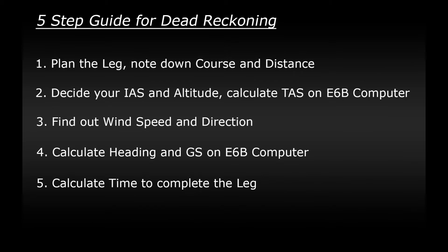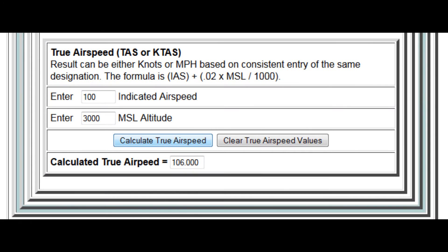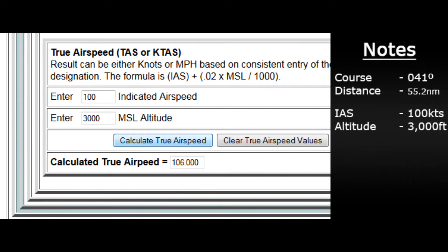Step two: decide on your indicated airspeed and altitude, and use those to calculate your true airspeed. In the Cessna, a comfortable cruise speed is about 100 knots indicated, and a safe altitude for flying over these islands and mountains is about 3,000 feet. We need to use an E6B computer to calculate the true airspeed — I like to use the one on csgnetwork.com. Enter the numbers and we get a true airspeed of 106 knots. Make a note of that.